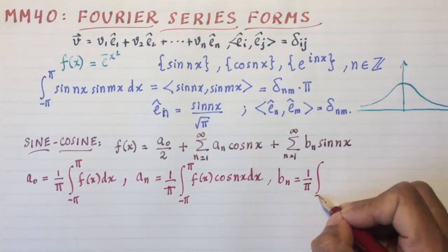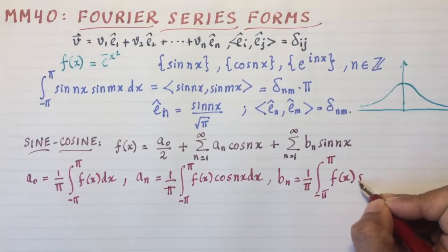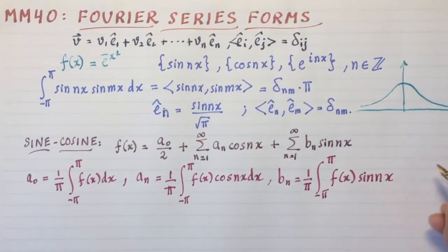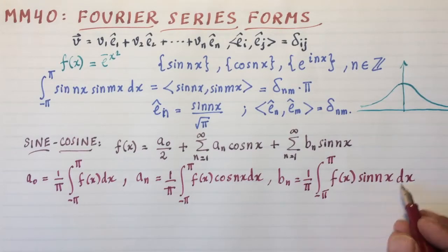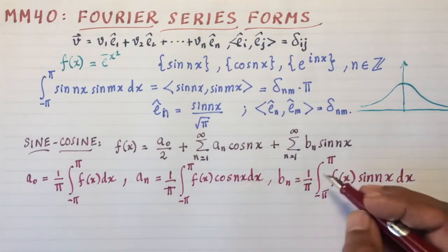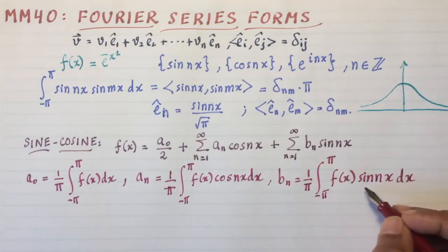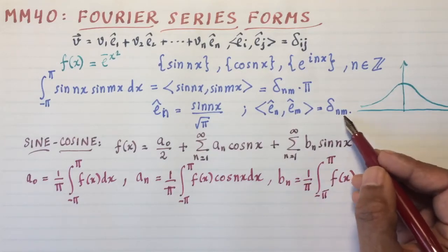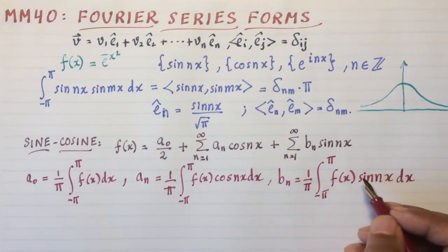And similarly b_n is 1/π, integral -π to π, f(x) sin(nx) dx. Now if you chose to multiply it by sin(mx) instead of sin(nx), then the only change that will happen is you'll get b_m's here. Because what you'll get on the right-hand side is going to be δ_nm, and so you'll get the n. So you have to change n to m in order to make this non-zero.